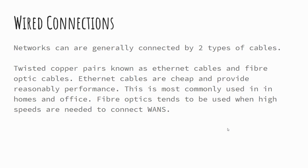Wired connections involve devices that have a physical cable plugging one device into another. This is one of the most stable mechanisms for connecting networks together because they're far less susceptible to interference — you don't get signal barriers or anything like that. They tend to be a far more stable connection with very little dropping.